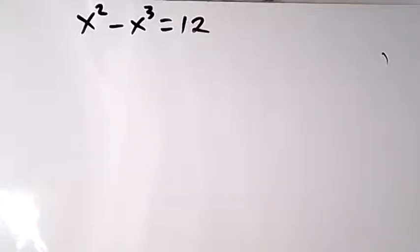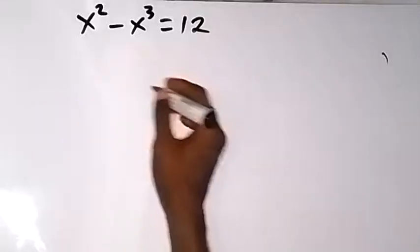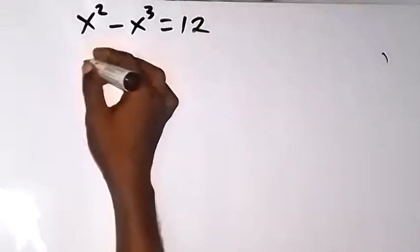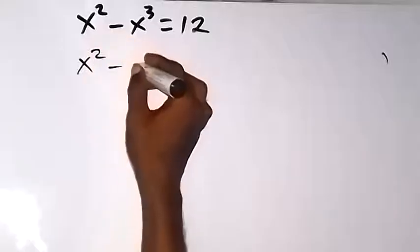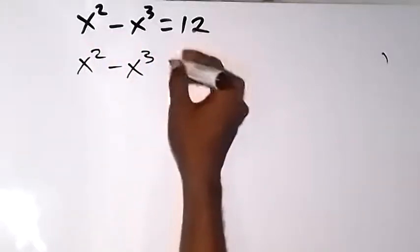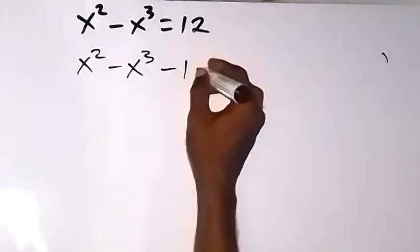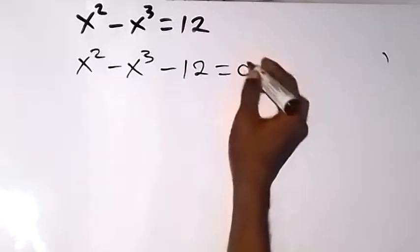Thank you for joining us. Let's solve this problem. We can bring this 12 here. We have x squared minus x cubed, then minus 12, now equals to 0.